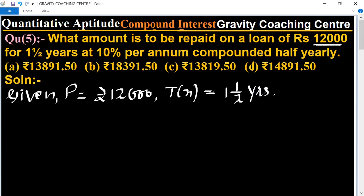One and a half years equals 3 upon 2 years. Since the per annum is compounded half yearly, we will change the year by multiplying by 2, so it will become per half annum.